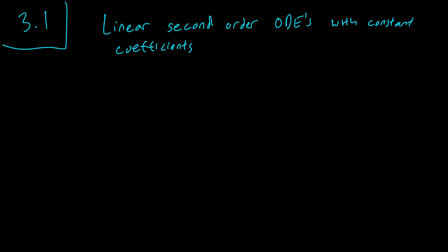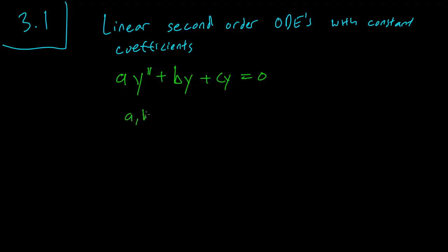Hello class, this is section 3.1 and we are going to discuss linear second order ODEs with constant coefficients. By this we mean that we have no x anywhere in the equation, so it's just a y double prime plus b y prime plus c y equals zero, where a, b, and c are constants.